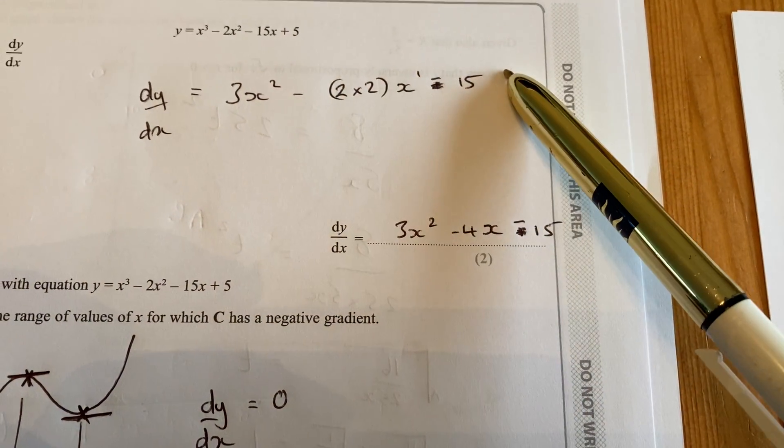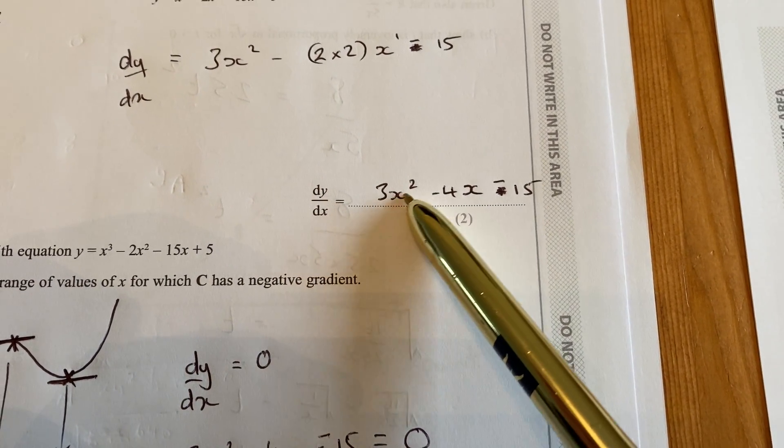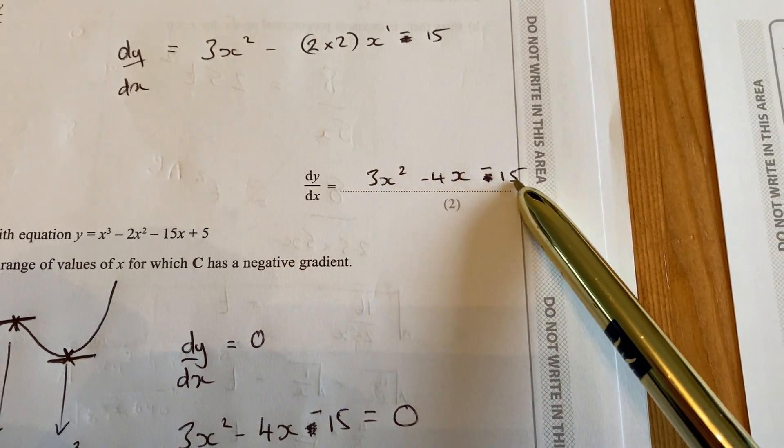which means we've got minus 15 by itself on the end, and the plus 5 disappears. So we're left with the final answer for the differentiation dy by dx is 3x squared minus 4x minus 15.